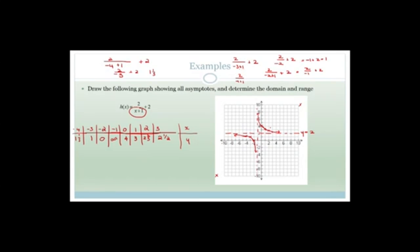So now you can see it's been shifted up and shifted left. If we had to determine the domain and range: the domain is x is an element of real values for x does not equal minus one — it cannot equal the asymptote at x equals minus one. The range: y is an element of real values, but y does not equal two because that's an asymptote.